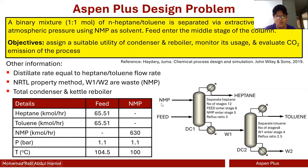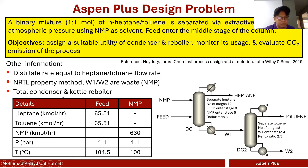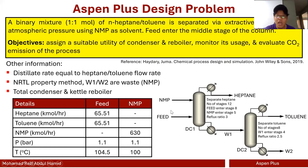We have two distillation columns, NMP feed, and a main feed. The first column gives us heptane, with W1 as a bottom product still containing toluene. It then goes to the second distillation column where toluene is separated from the NMP. Column DC1: 12 stages, feed stage 8, NMP stage 5, reflux ratio 3. Column DC2: 8 stages, feed stage 4, reflux ratio 2.5. Both use a total condenser and kettle reboiler, NRTL property method. Distillate rate for each column is 65.51 kmol/hr, equal to the heptane or toluene flow rate. This example problem is taken from a textbook.